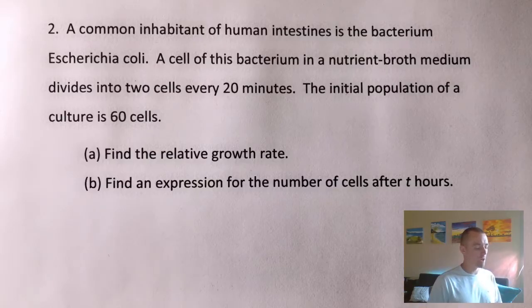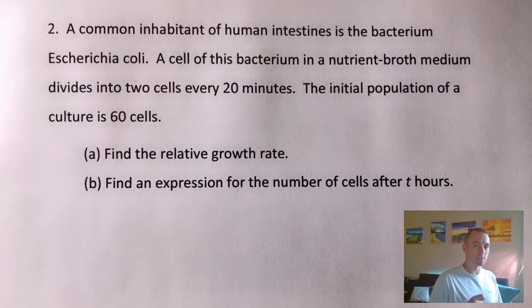We have a common inhabitant of human intestines, the bacterium E. coli. A cell of this bacterium in a nutrient broth medium divides into two cells every 20 minutes. The initial population of a culture is 60 cells. And this is going to be a two-part question. Part A is to find the relative growth rate and part B is to find an expression for the number of cells after t hours.